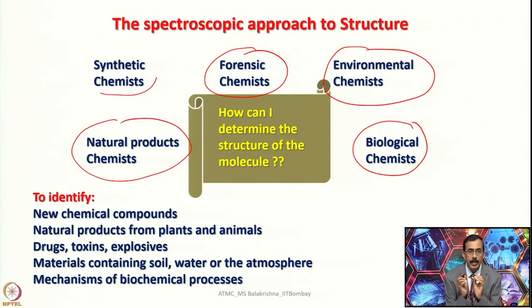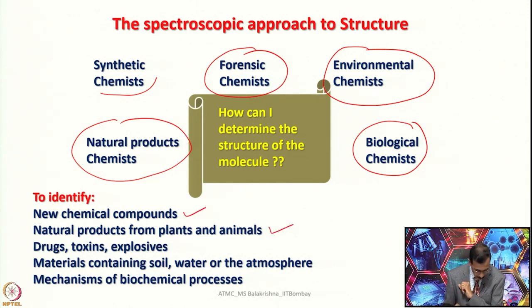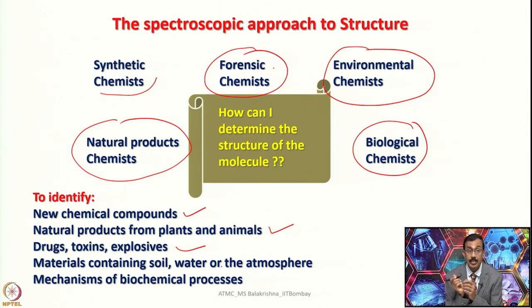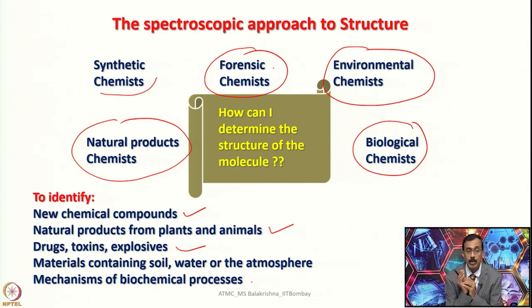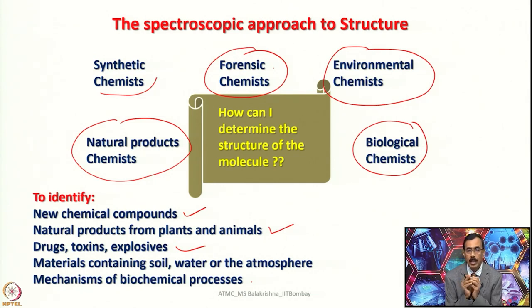That means spectroscopic methods are used to identify new chemical compounds that we make, natural products from plants and animals, and drugs, toxins, and explosives in forensics. Materials containing soil, water, or the atmosphere, agricultural science, and mechanisms of biochemical processes — to understand not only biochemical but also inorganic and organic processes — spectroscopy is a very important tool in the present scenario.